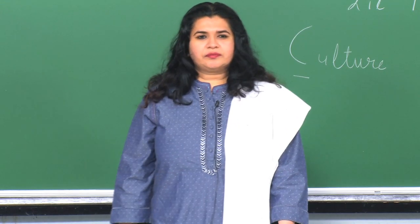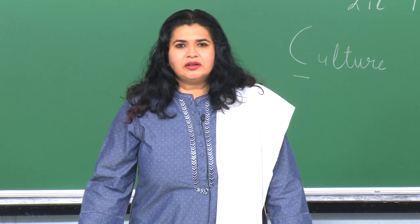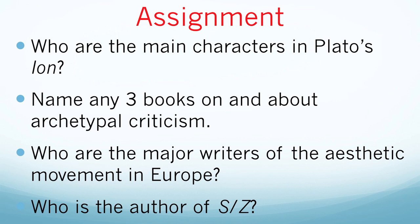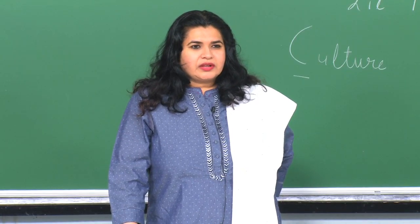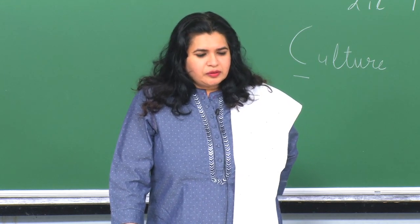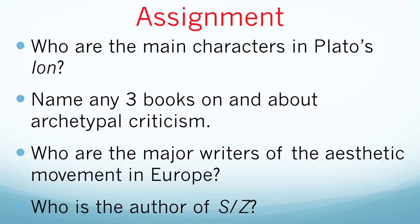At this point, I would draw your attention to an assignment which you should be submitting by the deadline. Question 1: Who are the main characters in Plato's Ion? Remember, for this assignment you will have to do some reading of your own, submitted according to the date given — please stick to the deadline. Question 2: Name any three books on archetypal criticism. Third: Who are the major writers of the aesthetic movement in Europe? And the last question: Who is the author of S/Z?